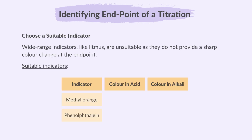Here are some suitable indicators. Methyl orange is red in acid and yellow in alkali. Phenolphthalein is colorless in acid and pink in alkali.